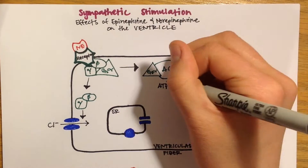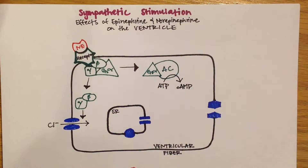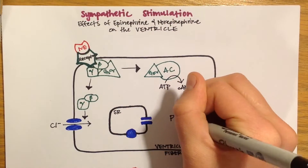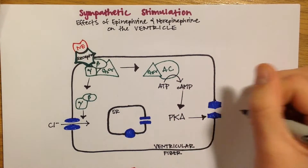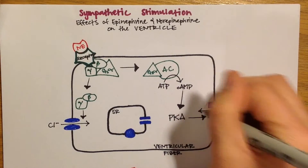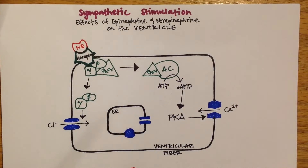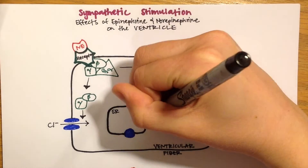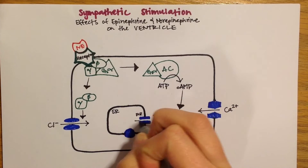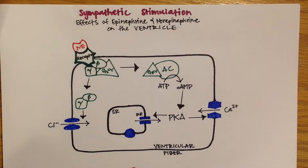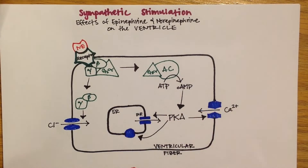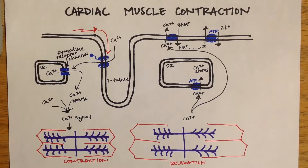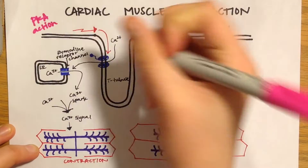cAMP will then activate protein kinase A. PKA will use phosphorylation to increase the activity of different ion pumps and channels in the cell. It stimulates the entry of calcium into the cell through L-type voltage-operated calcium channels. It phosphorylates the ryanodine receptor to stimulate the release of calcium. It also phosphorylates the calcium ATPase inhibitor phospholamban, so that it loses its inhibitory ability and the ATPase can increase the rate at which calcium enters the SR. This all increases the rate at which the cell can contract during a fight-or-flight response.